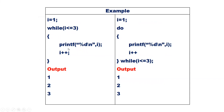Condition is true again, so we go to the body, print i — 2 will be printed, i++. i now becomes 3, goes back to the condition: 3 less than or equal to 3, condition true, go to the body, print i — 3 will be printed. i++ makes i become 4. Now i less than or equal to 3 is false, so the loop exits. Here we get the output 1, 2, and 3.